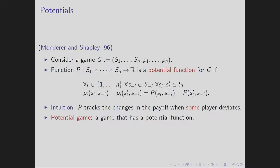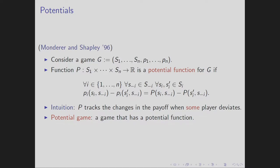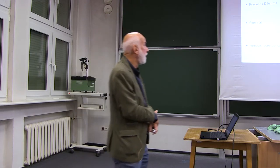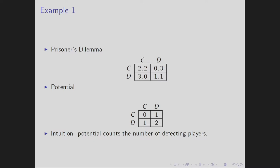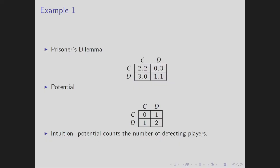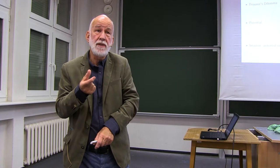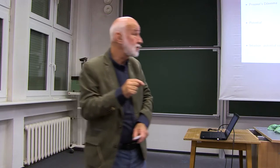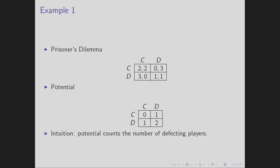Let us understand better the notion of potential. Prisoner's dilemma had this form and it is a game with a potential. To check that it's a potential, choose two adjacent squares — like the one where there is 0 and 1. This means the potential P at joint strategy CC delivers 0, and at CD delivers 1. The difference is minus 1 if you start from CC.